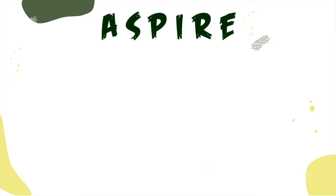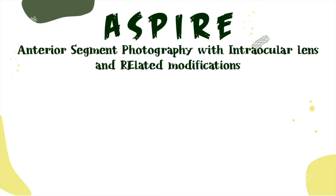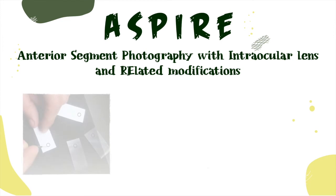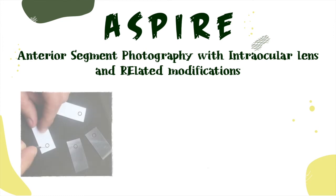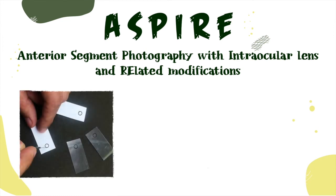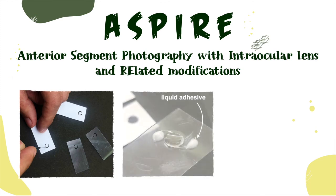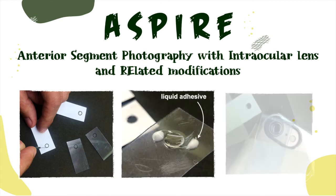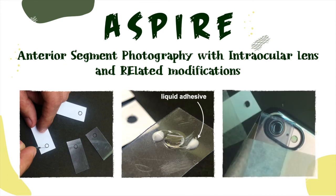The replacement for the slit lamp is ASPIRE — that is Anterior Segment Photography with Intraocular Lens and Related modification. It is made by creating holes on top of a 4 x 2 cm chart paper and attaching a lens with a liquid adhesive, and then attaching it to the camera of the smartphone.